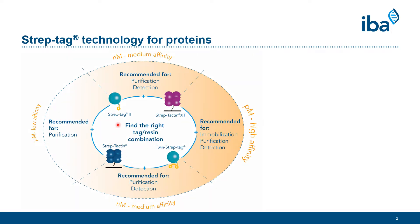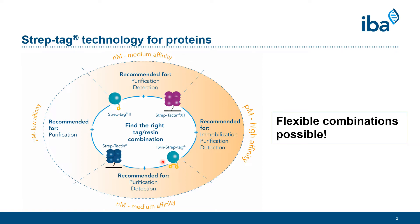When combining Streptactin and StrapTech2, a micromolar affinity is achieved, making protein purification possible. If a higher affinity is needed, either the tag or ligand can be exchanged, increasing the affinity to a nanomolar range, and besides purification, detection is also easily possible. For some applications an even higher affinity is required. This can be achieved by using Streptactin XT in combination with the twin StrapTech, leading to a picomolar affinity and making more analytical applications like immobilization possible. You can choose which combination to use according to your needs.